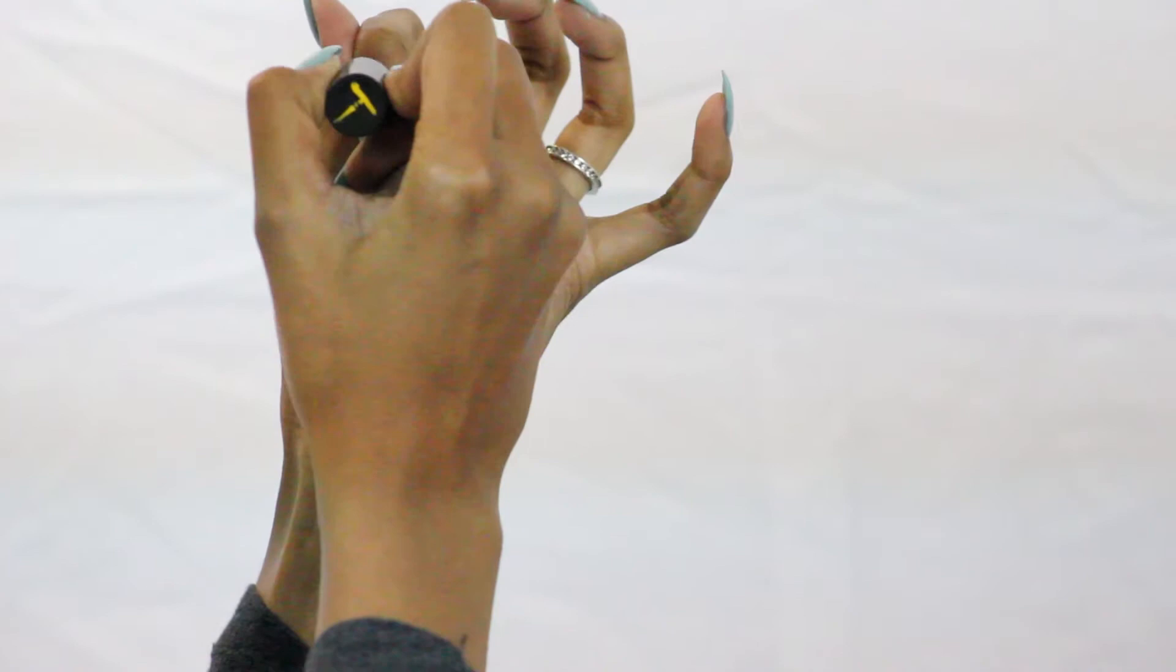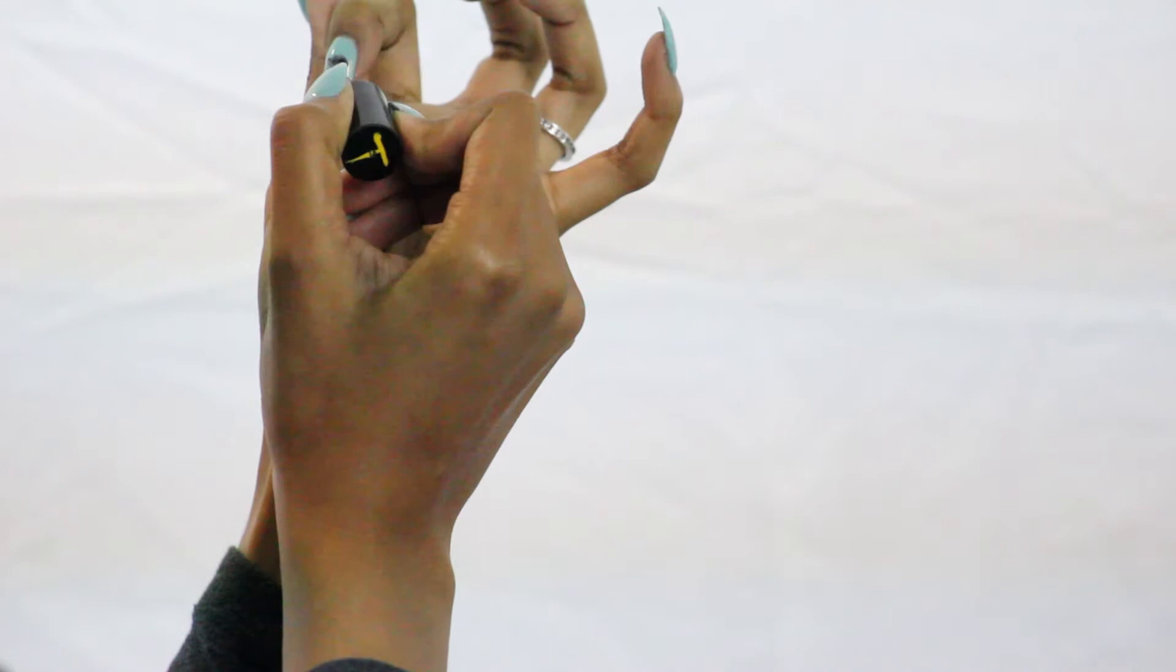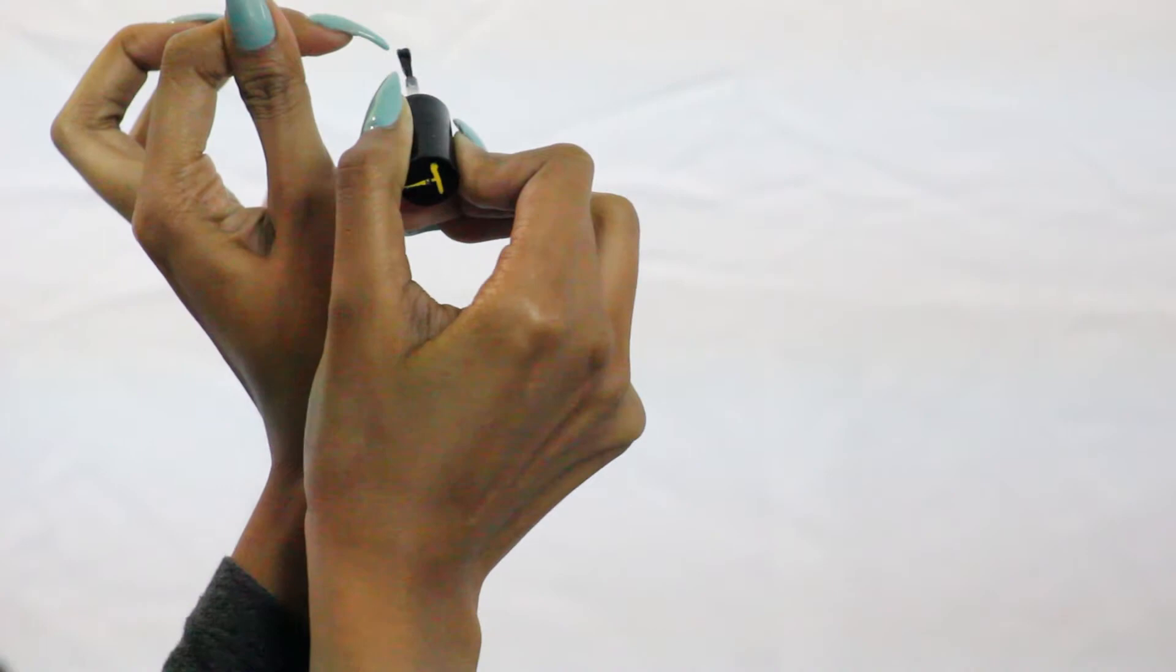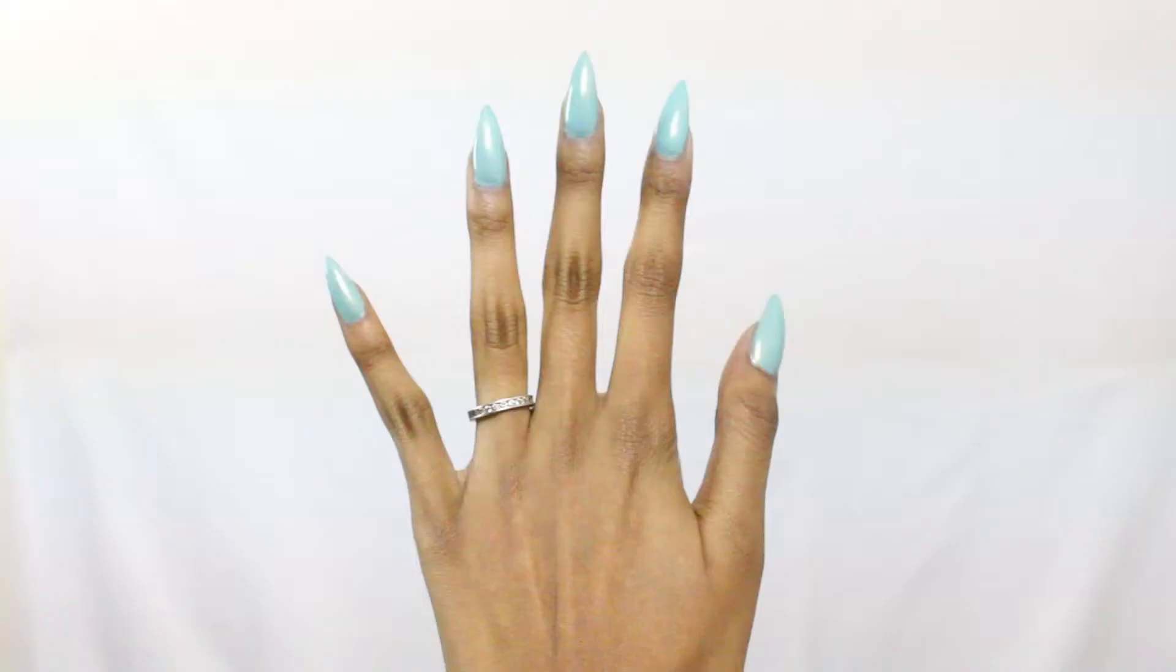Finally, we're going to top it off with top coat. Top coat, the same steps that we have been doing. Top to bottom, corner, middle bottom, side bottom. Don't forget to seal the edges.